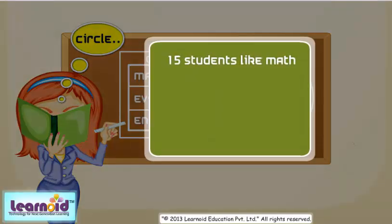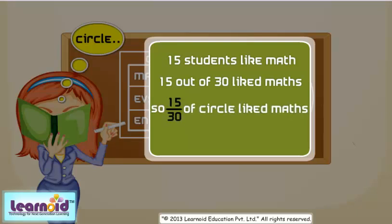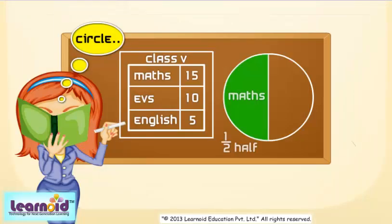Let's start with Maths. 15 students like Maths. 15 out of 30 like Maths, so 15 by 30 of the circle represents Maths. That is 1 by 2 of the circle represents Maths.